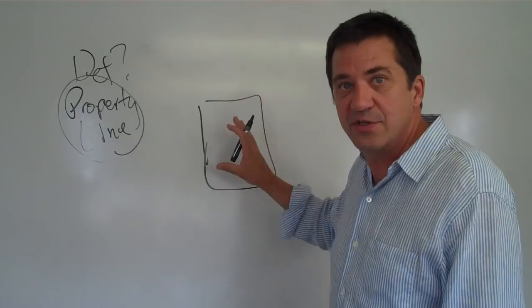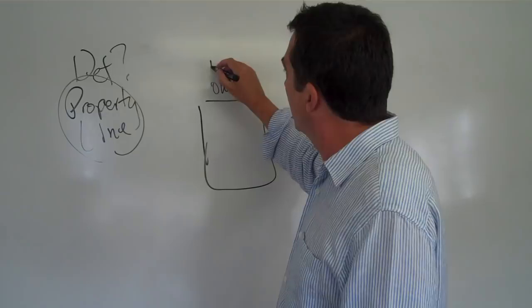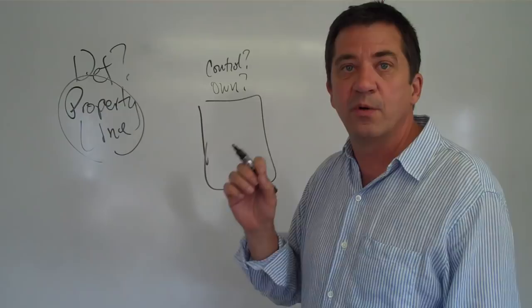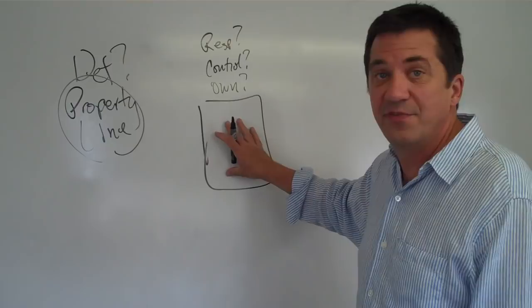Now what does a boundary do once you have a definition? Well, it defines ownership. Who owns this? Because if you know who owns it, you know who controls it. And if you know who controls it, you also know who to hold responsible for it. So who owns it, who's in control of it, and who's responsible for it? That's what boundaries tell us because in the physical world,